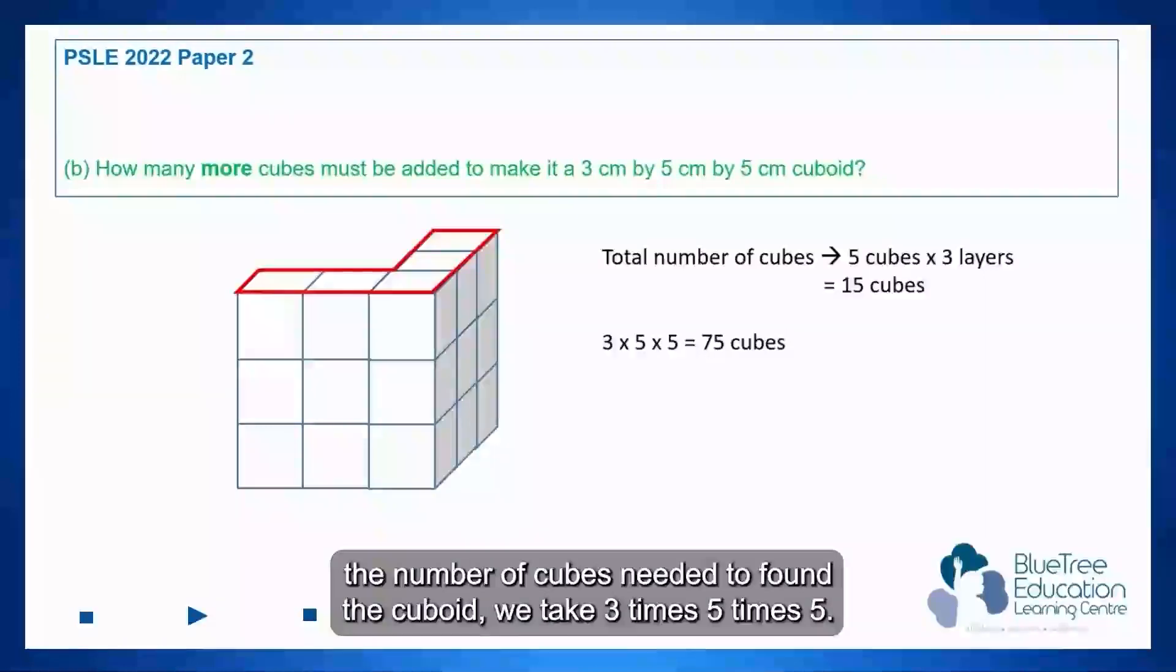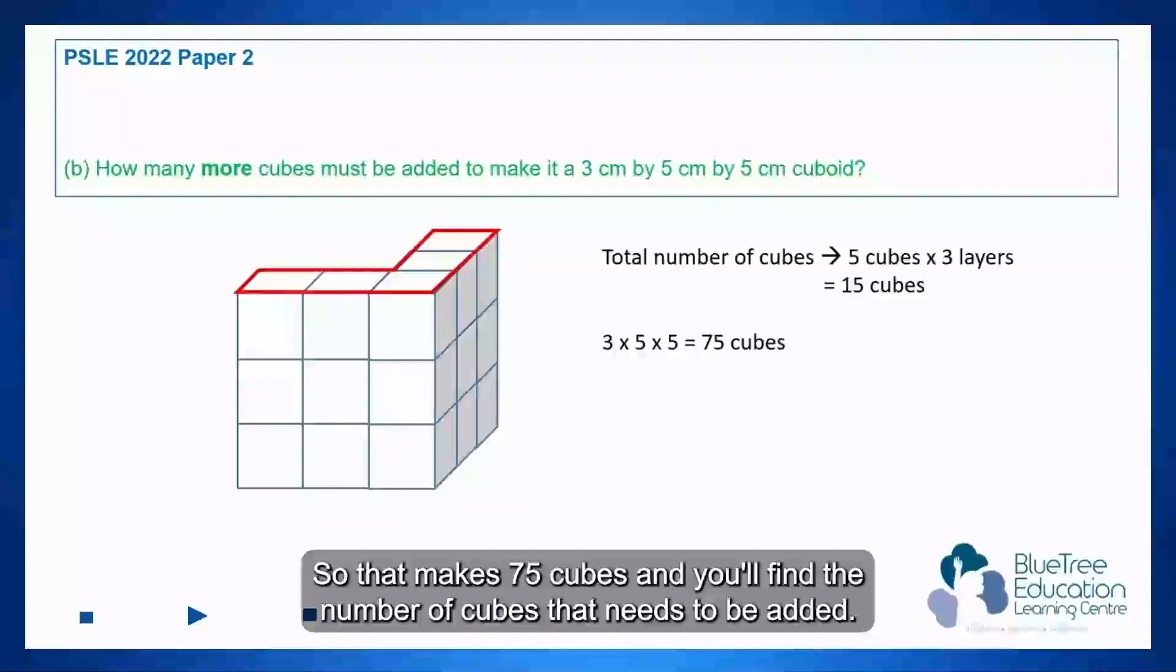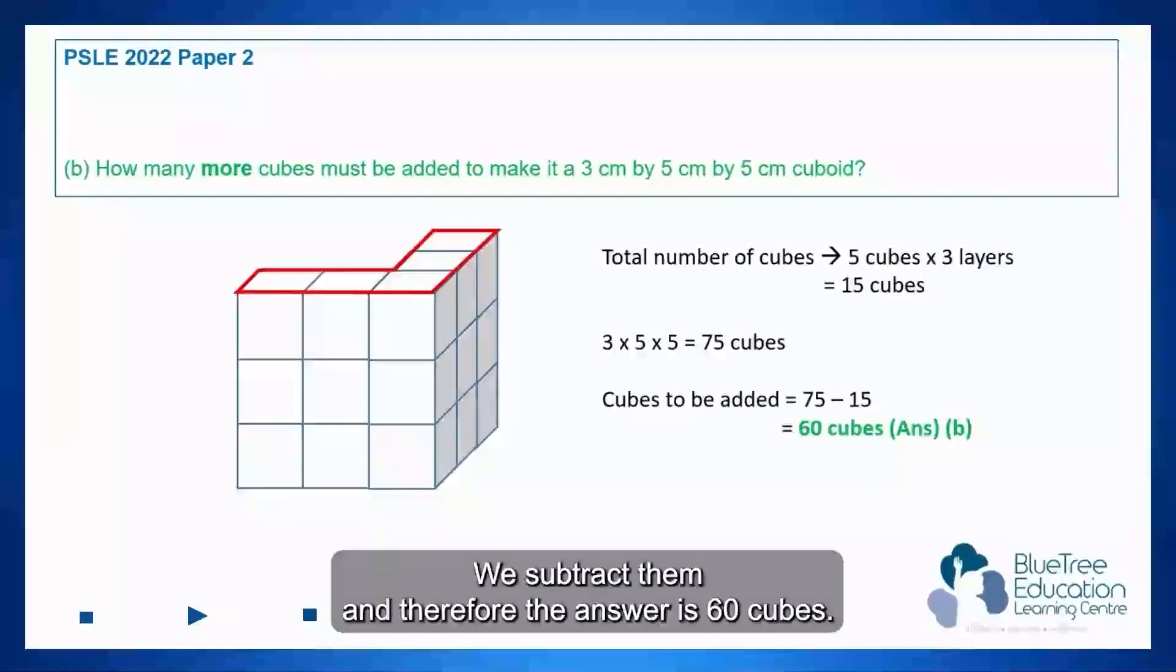And to find the number of cubes needed to form the cuboid, we take 3 times 5 times 5. So that makes 75 cubes. And to find the number of cubes that needs to be added, we subtract them. And therefore the answer is 60 cubes.